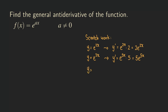Let's try a negative exponent. How about e to the negative 3x? Then y prime is going to be equal to e to the negative 3x, times negative 3, giving us negative 3e to the negative 3x.